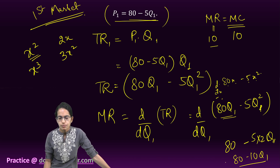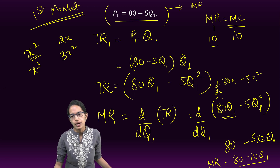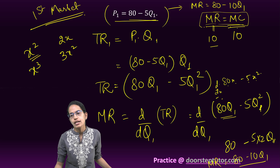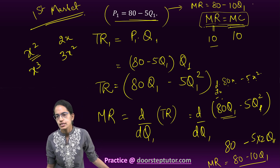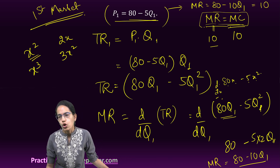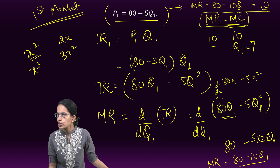Setting marginal revenue equal to marginal cost: 80 − 10Q1 = 10. Solving this gives Q1 = 7, since 80 − 70 = 10. So Q1 = 7 and P1 = 80 − 5×7 = 80 − 35 = 45. These are the values for the first market function.